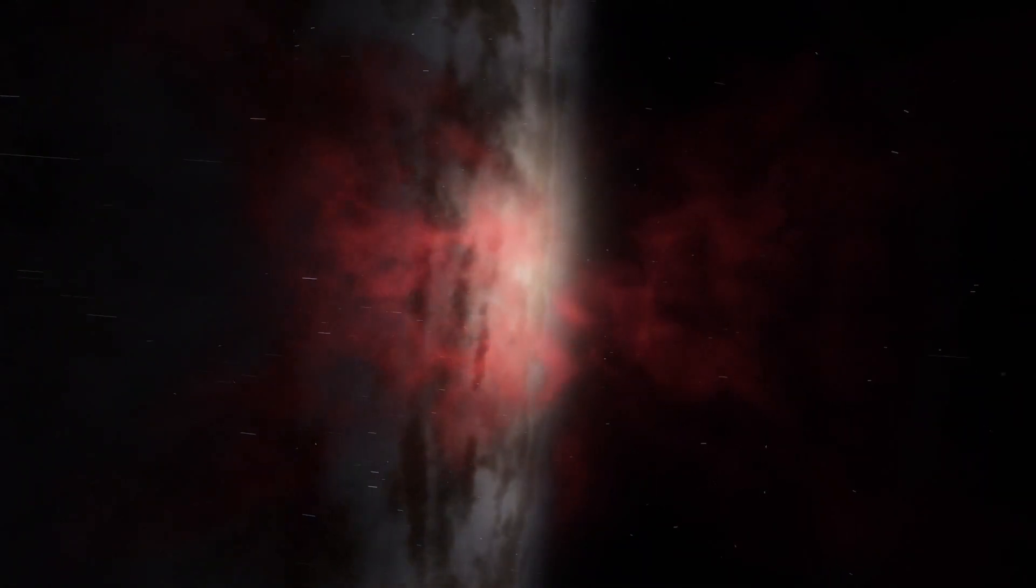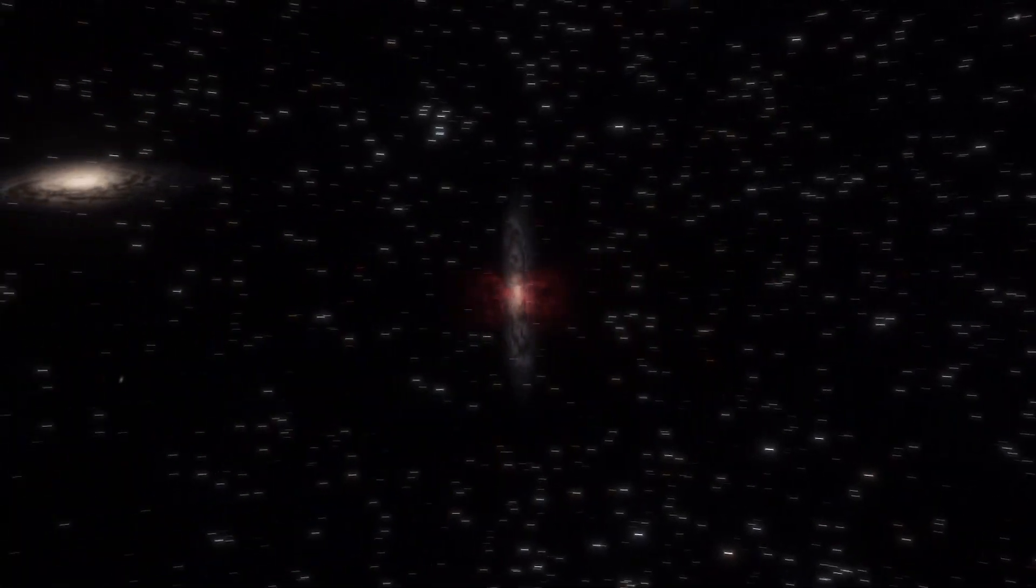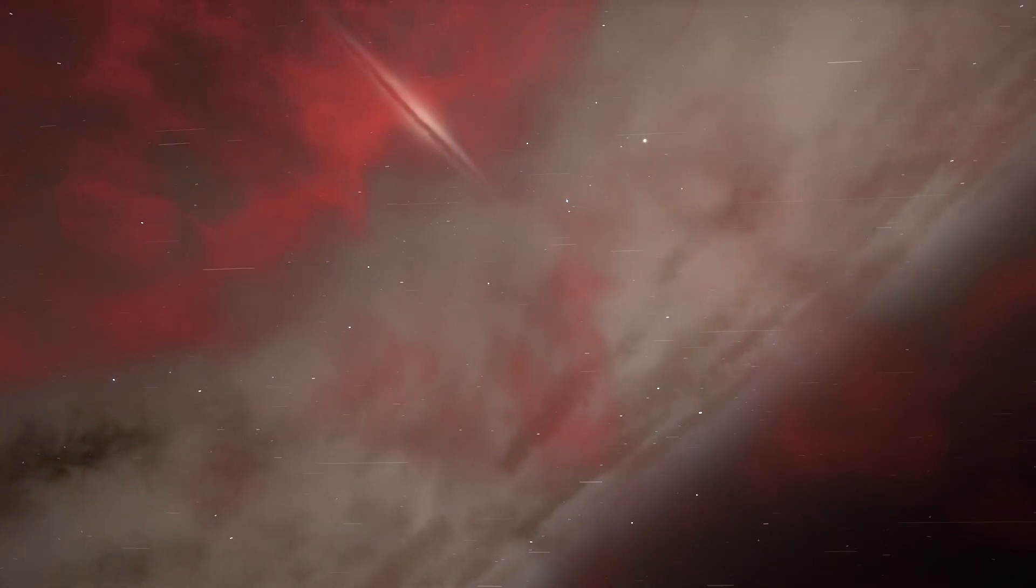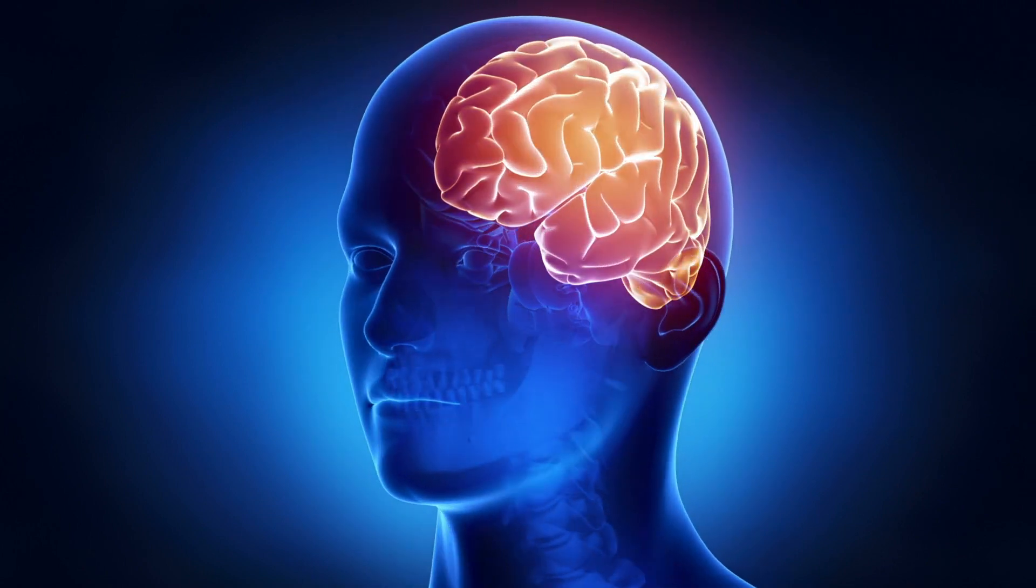On the contrary, the universe looks very different on a smaller scale than on a larger one. Galaxies don't look at all like the cosmic web they create. So the brain ceases to look like a neural network when observed at different scales.